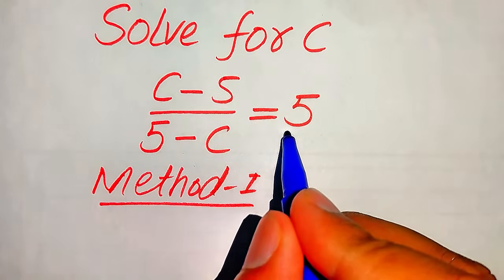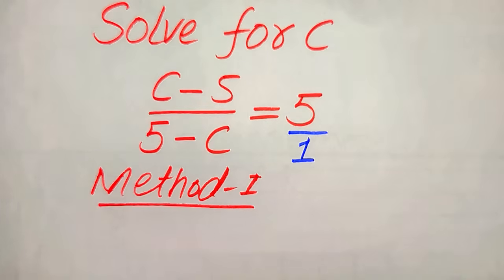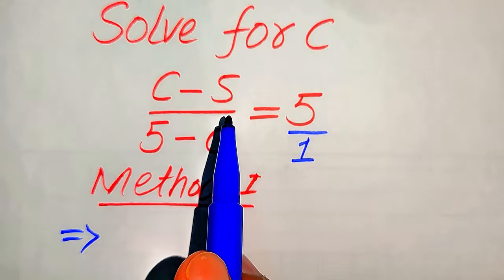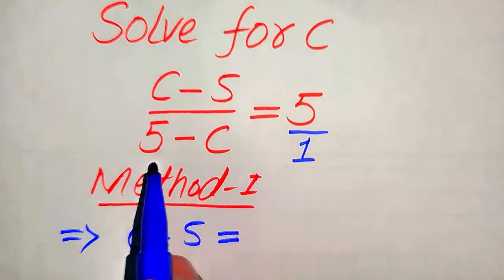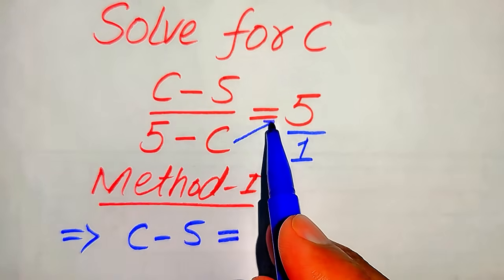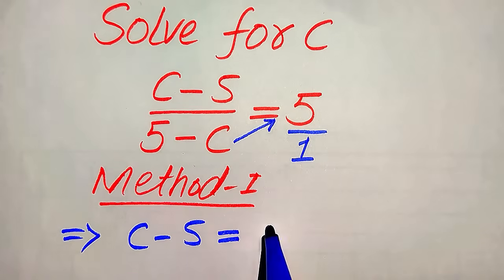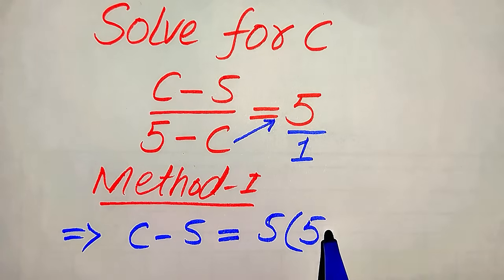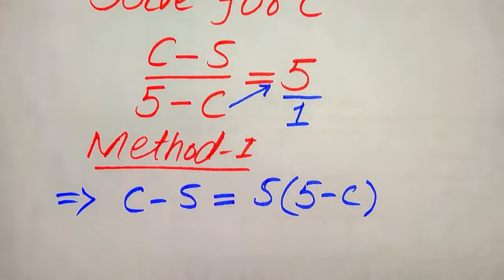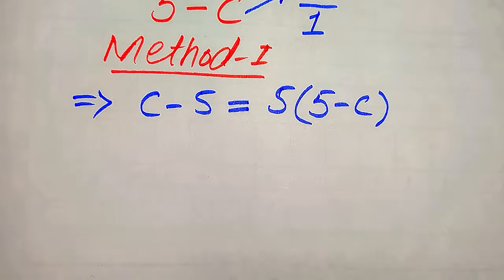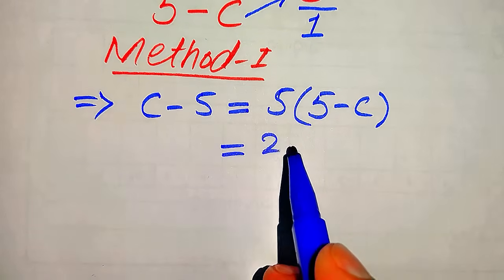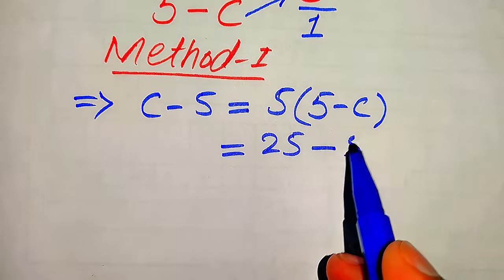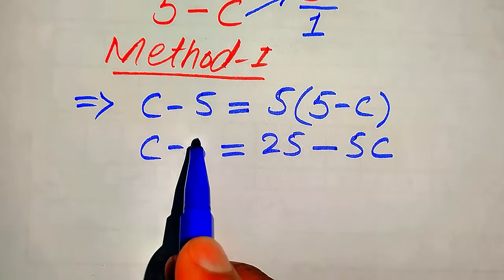In the first method, the denominator on the right hand side is 1, so we cross multiply the terms. We multiply 1 with c minus 5, giving c minus 5, and 5 minus c is multiplied by 5. After cross multiplication we get the right hand side as 5 times of 5 minus c. Simplifying, 5 times 5 becomes 25, and 5 times c becomes 5c, so the left hand side is c minus 5.